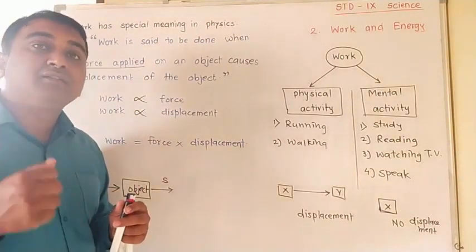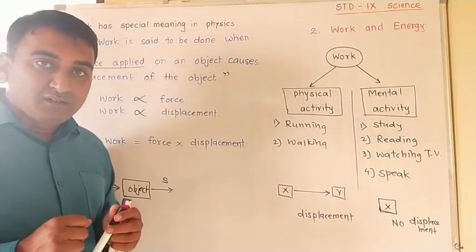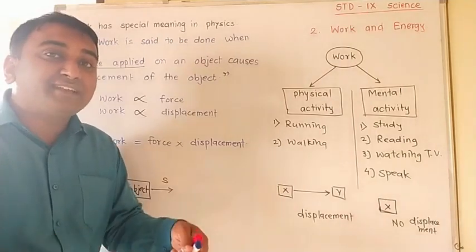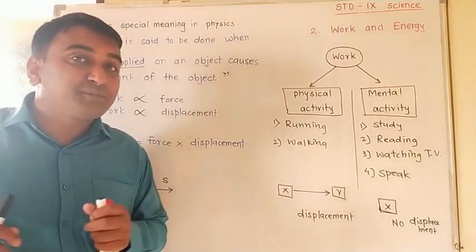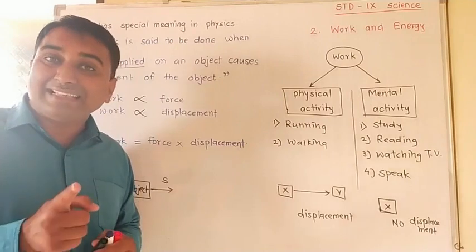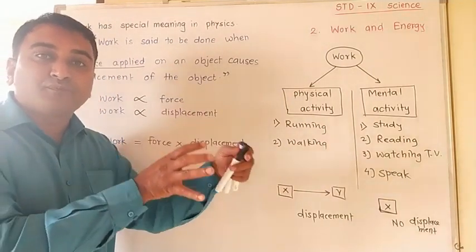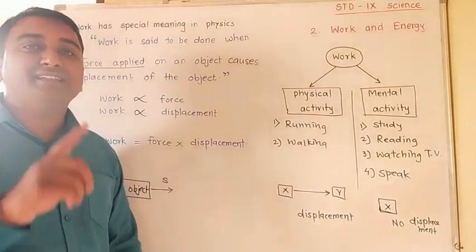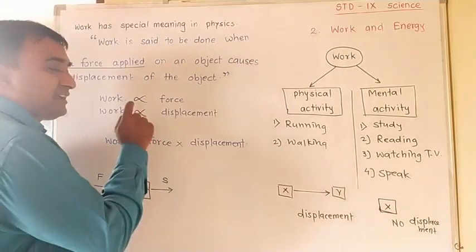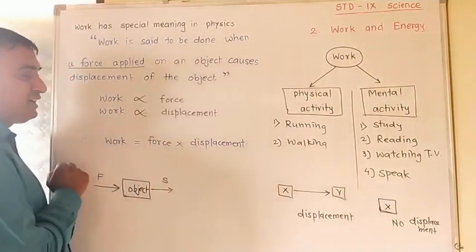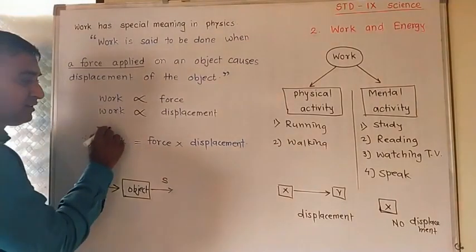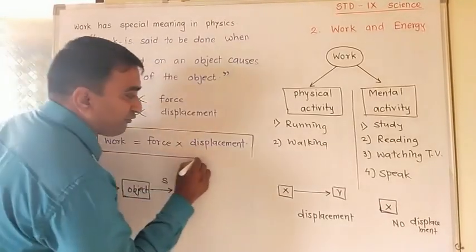If you carry a bag 1 kilometer and a second person carries the same bag 3 kilometers, the second person has a greater displacement. So the second person's work done is more. Work is directly proportional to force and work is directly proportional to displacement. Therefore, work is nothing but the product of force and displacement.